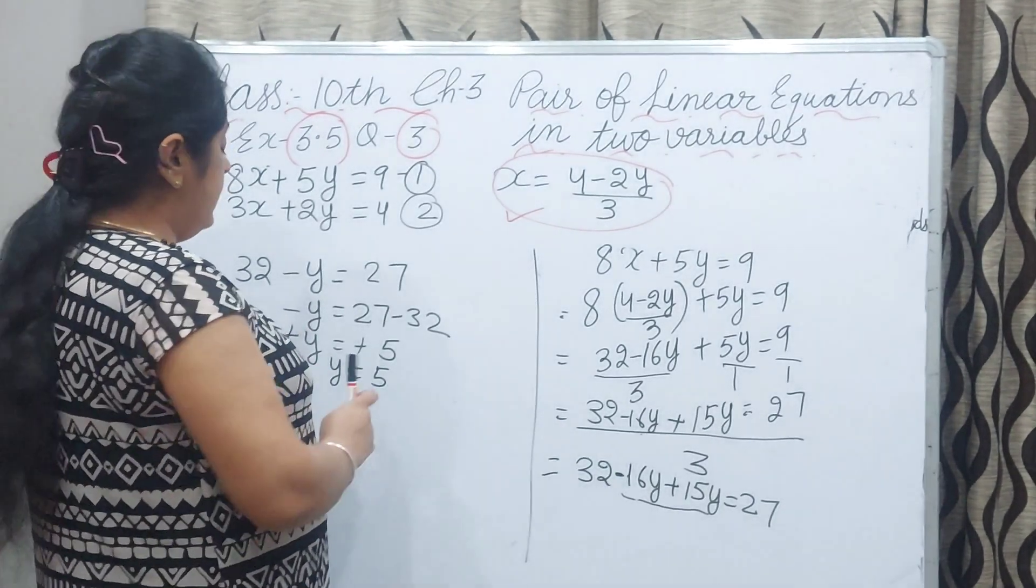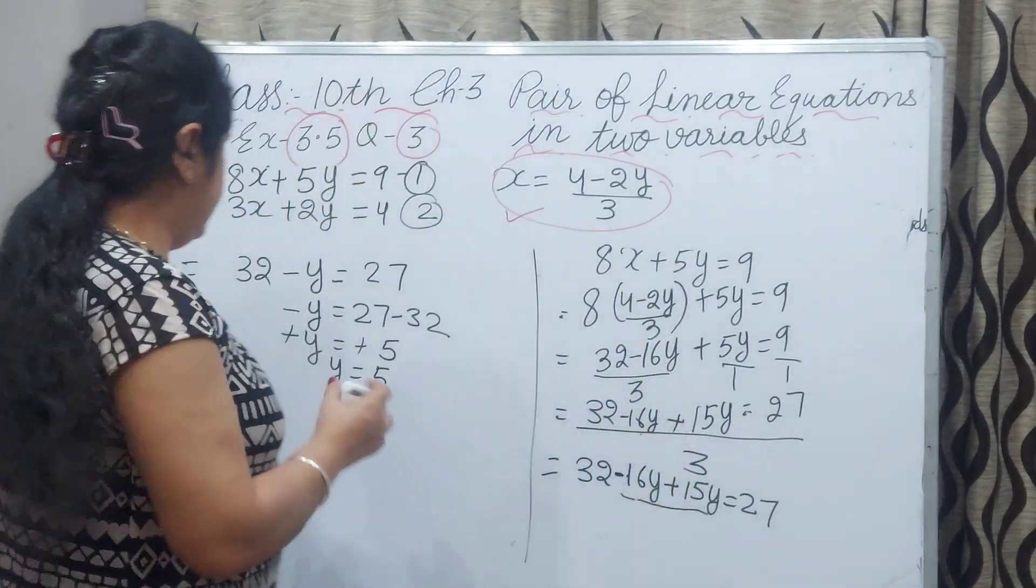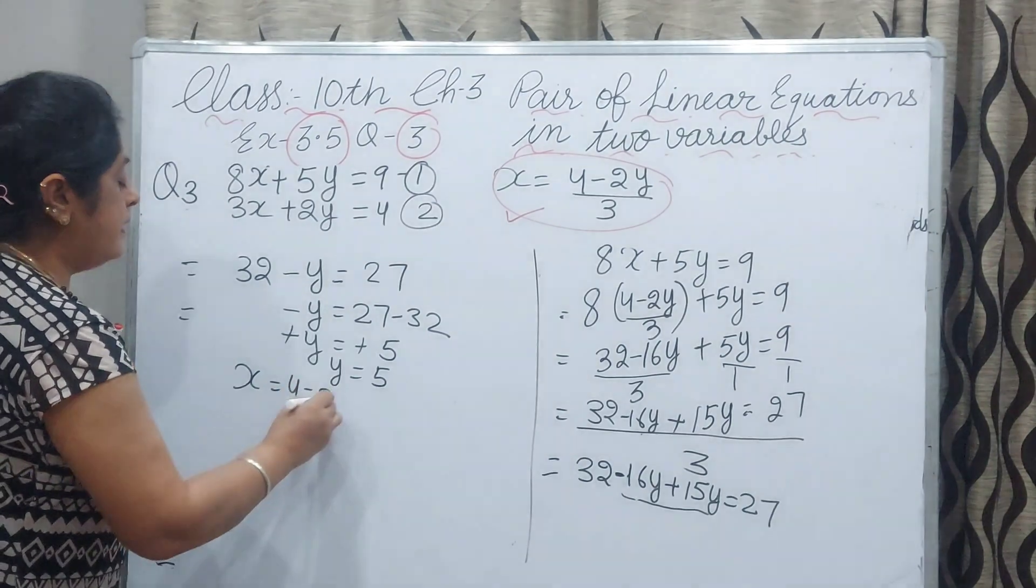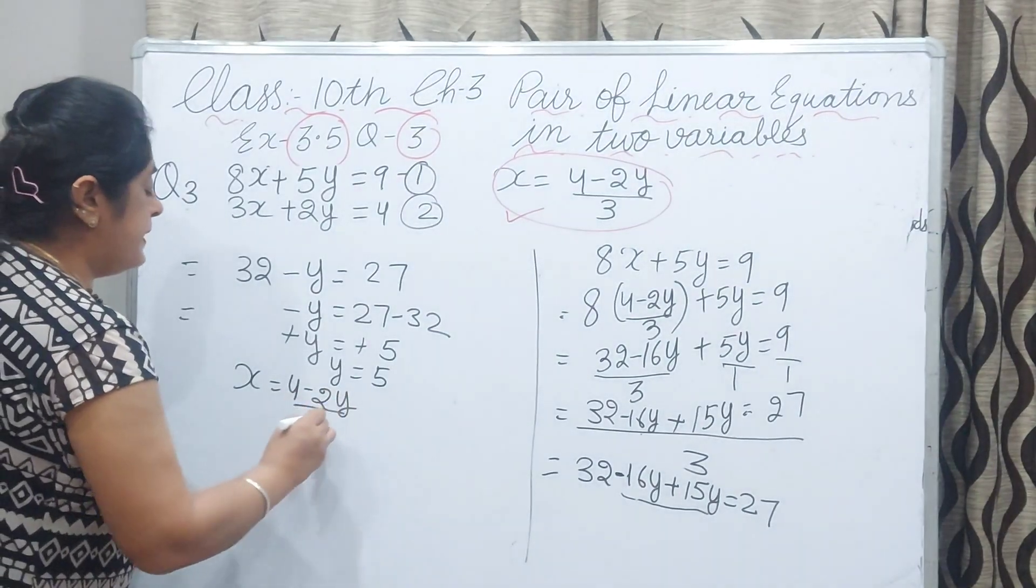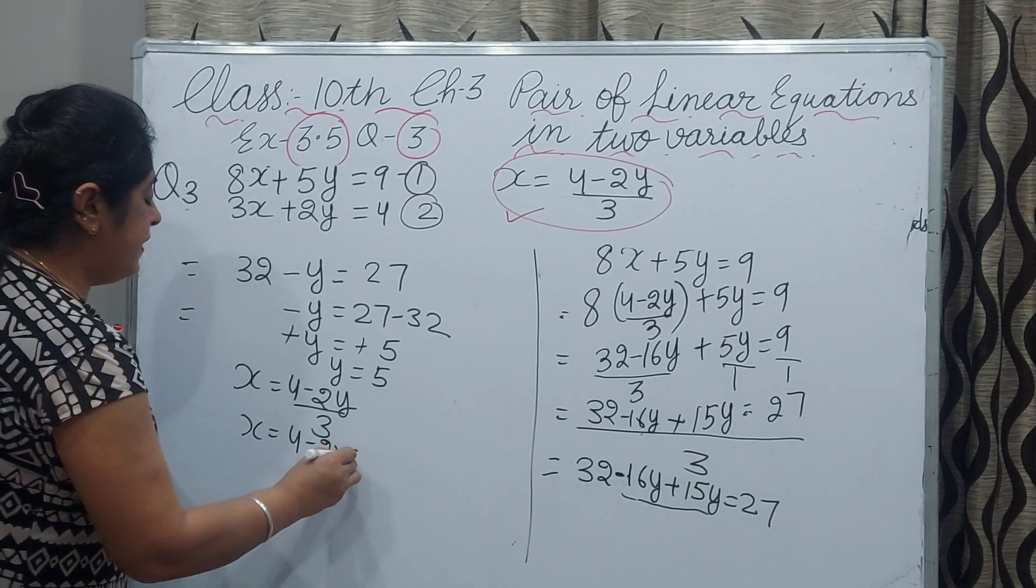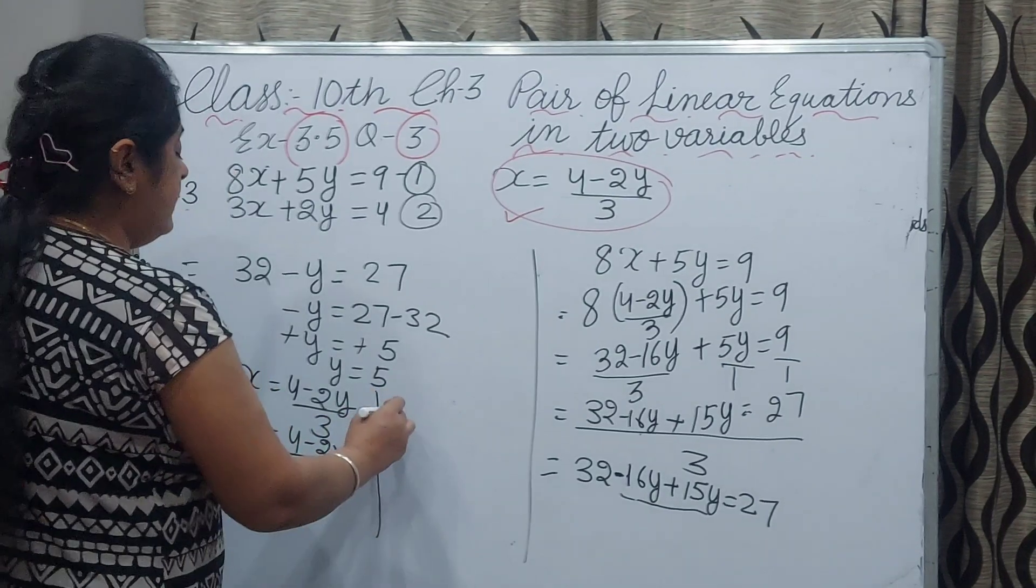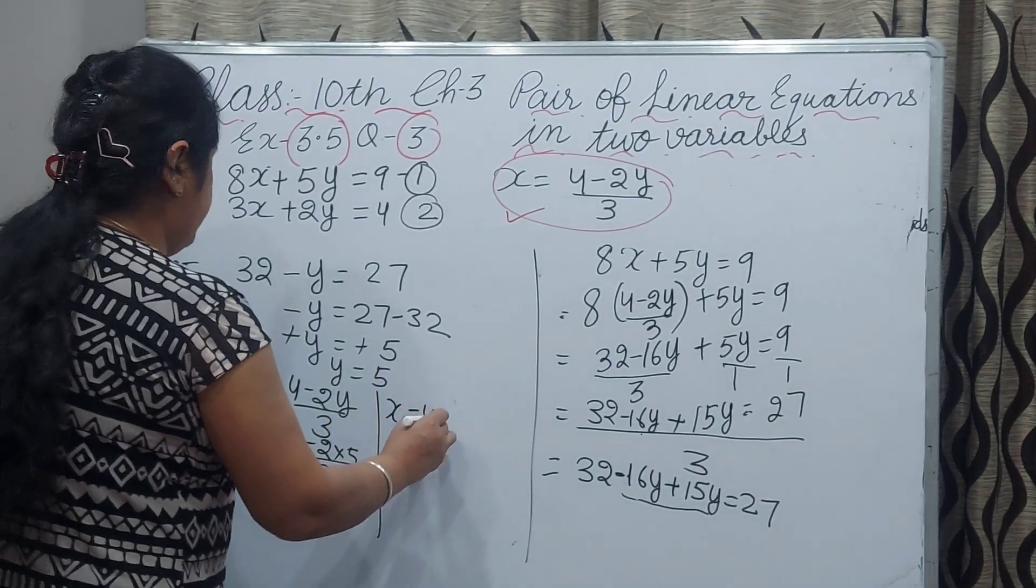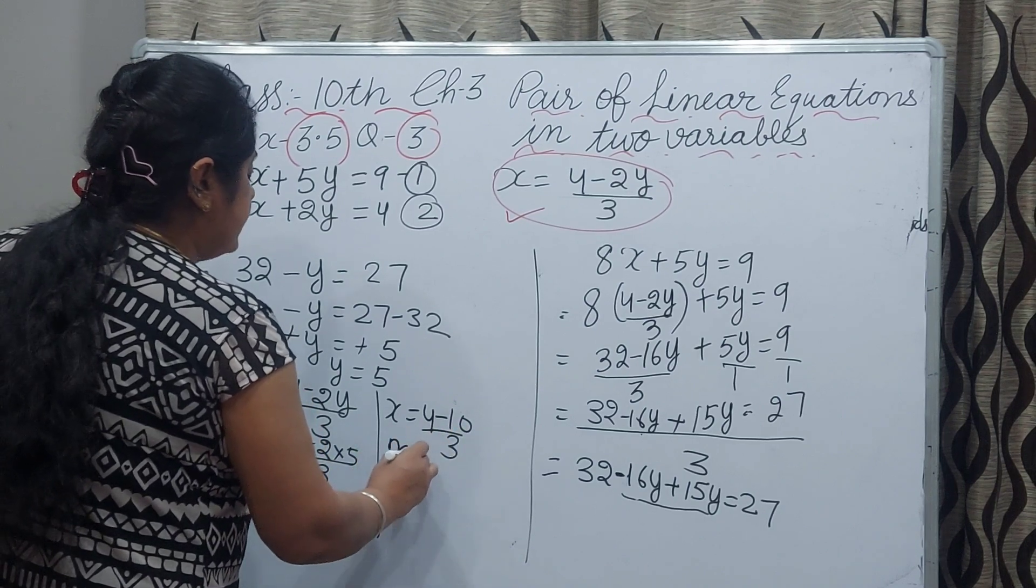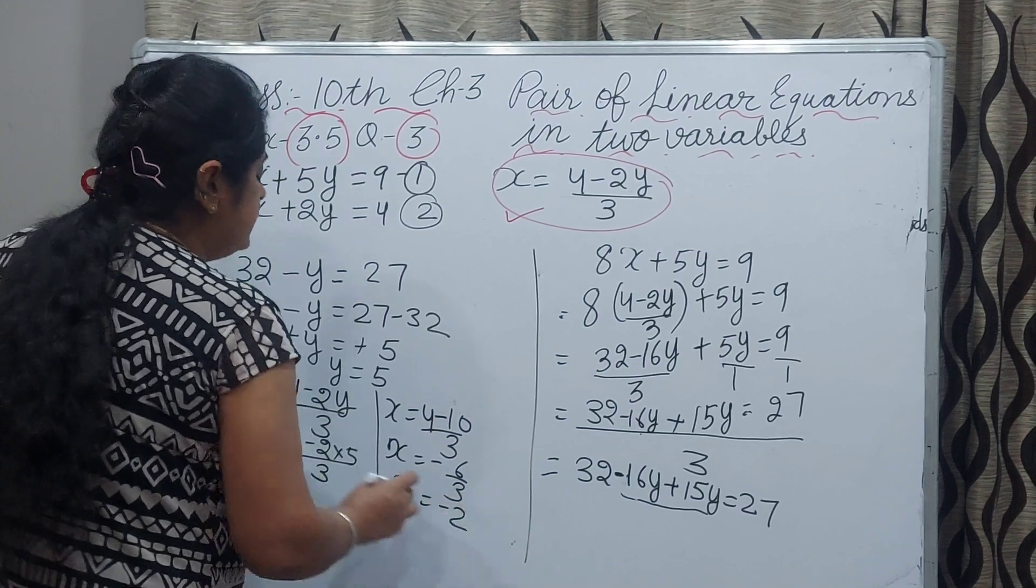Now this equation x equals 4 minus 2y by 3. We will put the value of y and then we get the value of x. x is 4 minus 2y by 3. You can write 4 minus 2 multiply 5 by 3. We will solve it. 4 minus 10 by 3.